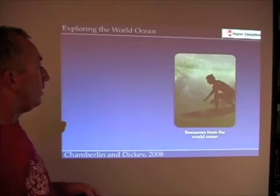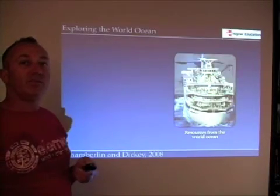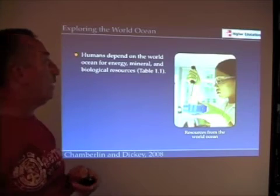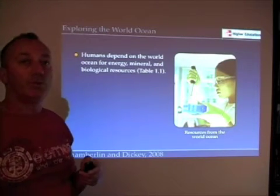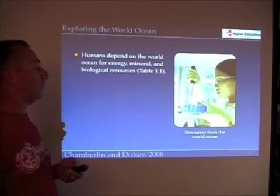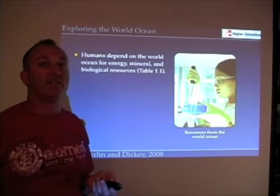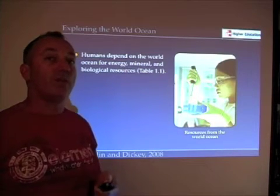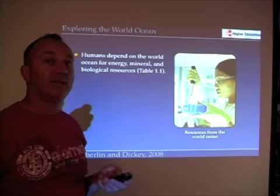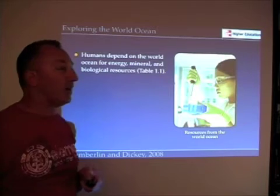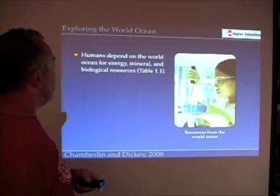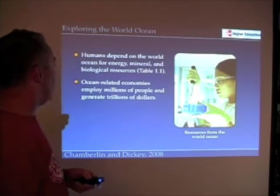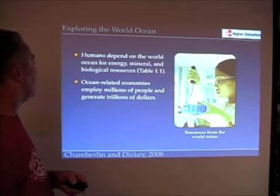If we think about some of the things that we get from the ocean, the list is really long and plentiful. Table 1.1 in Chapter 1 shows that humans depend on the world ocean for a variety of things: energy resources, mineral resources, biological resources. If you eat anything from the sea, you're depending on it. Some biological resources you may not even be familiar with — toothpaste contains parts of kelp plants, seaweeds in fact. Ocean-related economies employ millions of people and are worth billions — trillions of dollars, really. The ocean economy is very important to us.